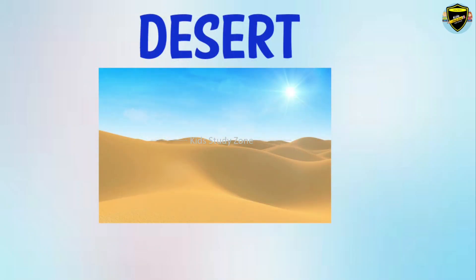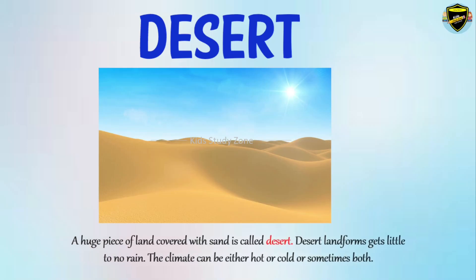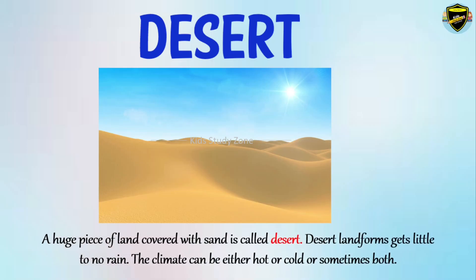Desert. A huge piece of land covered with sand is called a desert. Desert landforms get little to no rain. The climate can be either hot or cold, or sometimes both.